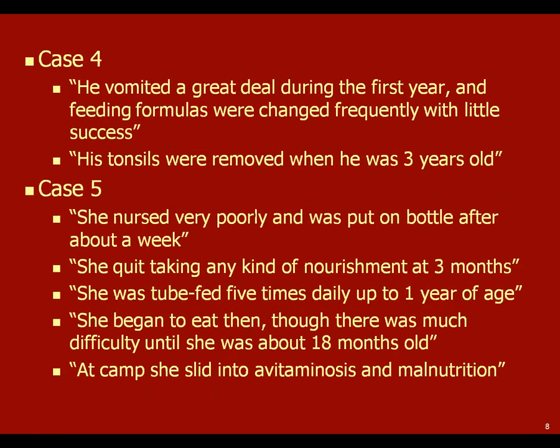In case four, frequent vomiting and regurgitation, the need for changing formulas with little success, and tonsils being removed. In case five, a female had difficulty nursing to the point of requiring tube feeding up until the age of one year, along with avitaminosis and malnutrition.